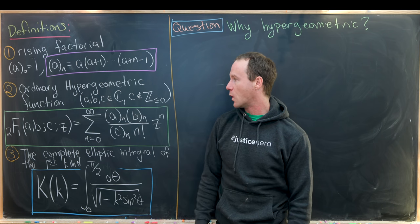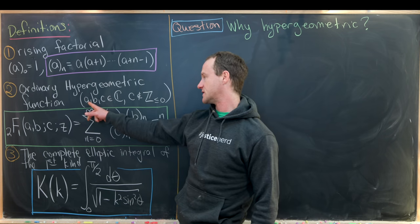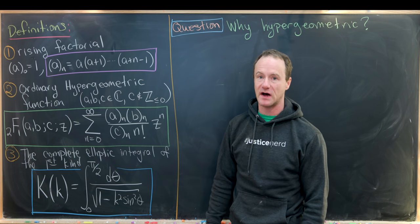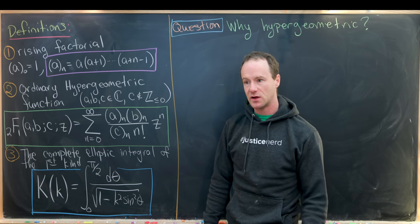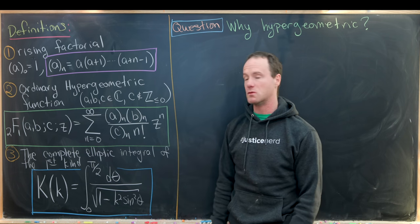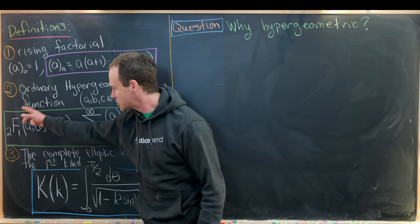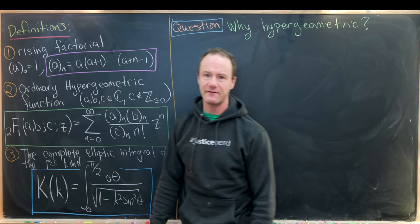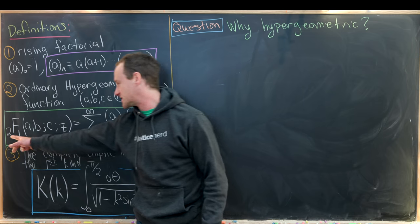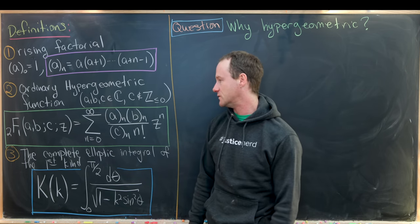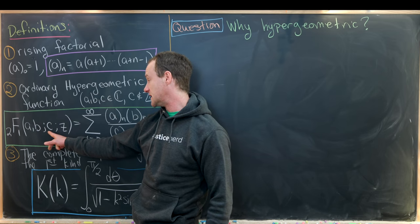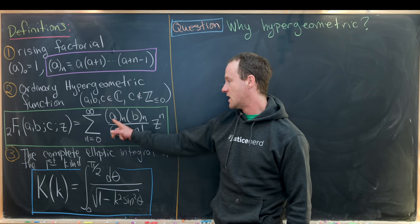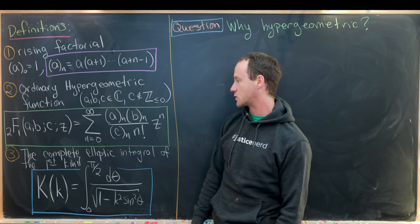Now we'll define the ordinary hypergeometric function. It has parameters A, B, and C, which are complex numbers, with one restriction that C cannot be a non-positive integer — so it could be a positive integer or a negative real number, but not zero, negative one, negative two, and so on. We write this as 2F1 with A, B, C and variable Z, defined as the sum as n goes from zero to infinity of (A)_n (B)_n over (C)_n times n factorial times Z to the n.